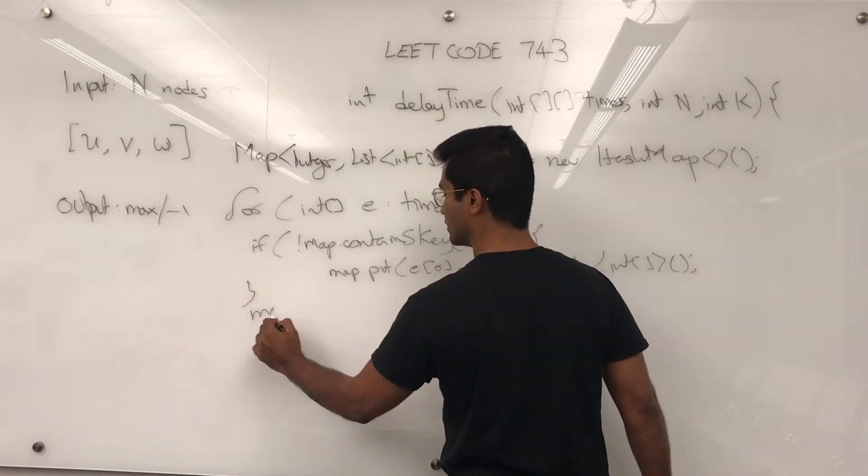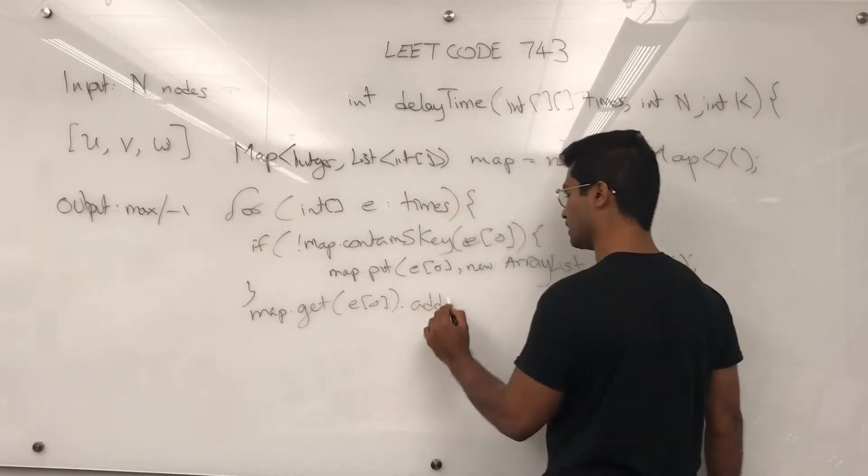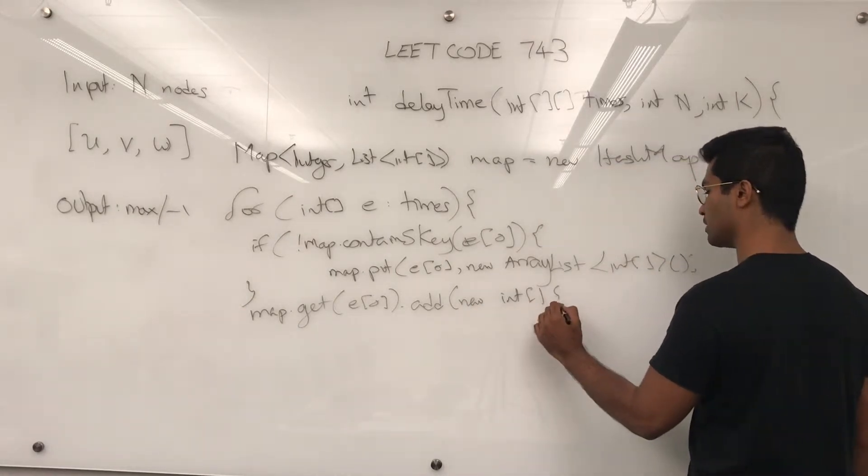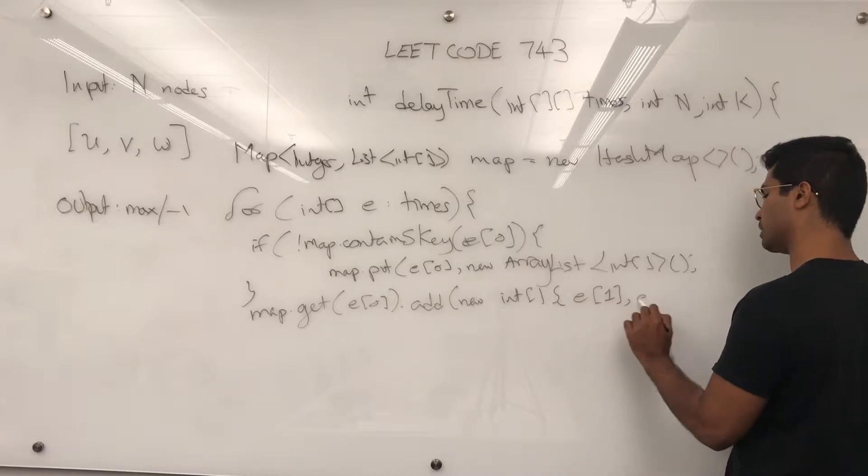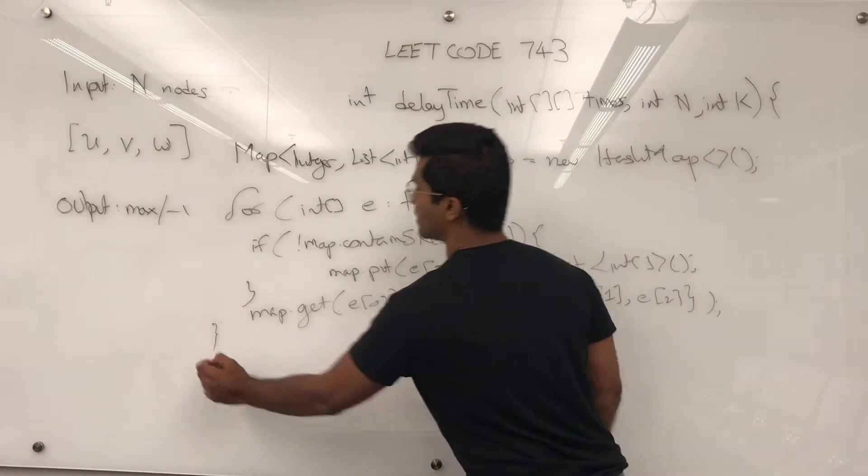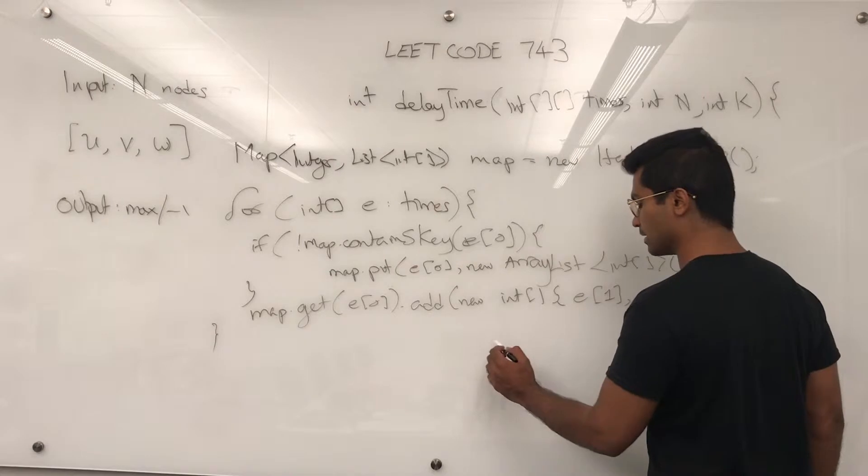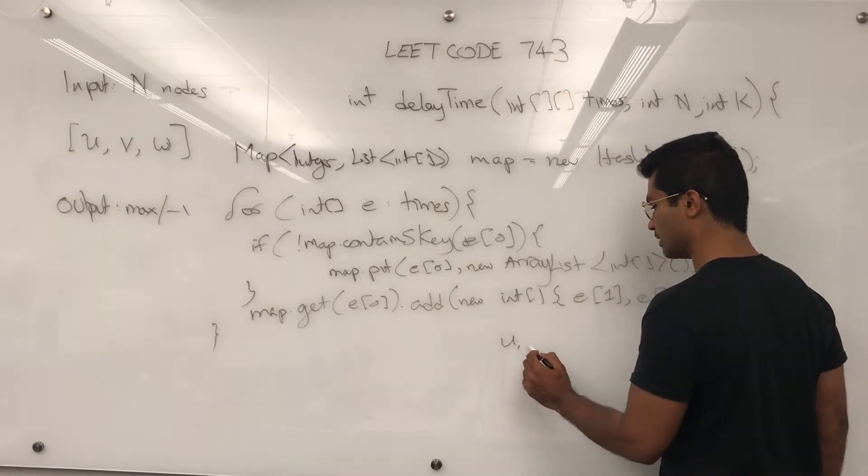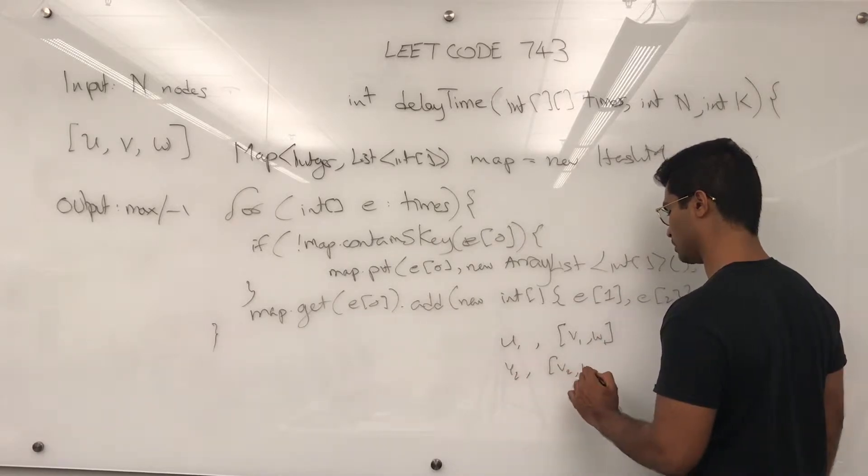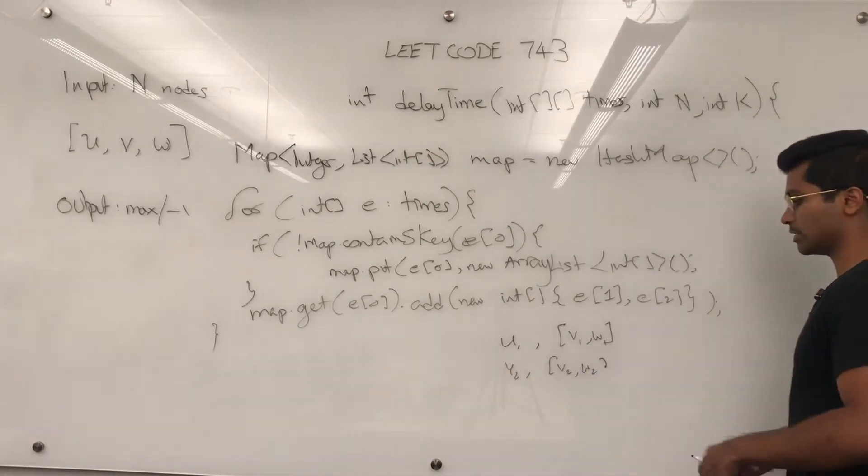And then once that's done, we're going to do map.get E of 0 and then add new int array. It's going to be made of E of 1 comma E of 2. And that's how we first generate our map. And the key and value pairs are going to look like this. The key is going to be like U1 and then the value pair is going to be like V1 comma W1 and then U2 comma V2 comma W2. So, this is transforming matrix into adjacency list.